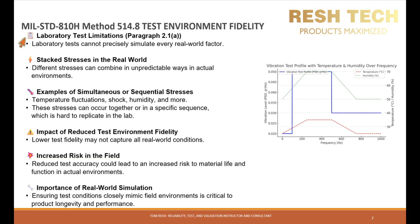In regards to lab tests versus real-world stress, while lab tests are designed to simulate real-world conditions, they cannot capture the full spectrum of stresses that a product may encounter in actual usage. Environmental factors such as temperature variations, humidity, and unexpected impacts may differ significantly between controlled lab environments and real-world scenarios. The interaction of different types of stress — for example, vibration combined with thermal exposure — can lead to unique failures that are difficult to replicate in a lab setting. In real-world environments, products often face multiple types of stress simultaneously, such as vibration, thermal cycling, and mechanical loads. Lab tests typically focus on individual stress factors, so it is crucial to combine various stressors to more closely simulate the actual conditions in your lab testing.